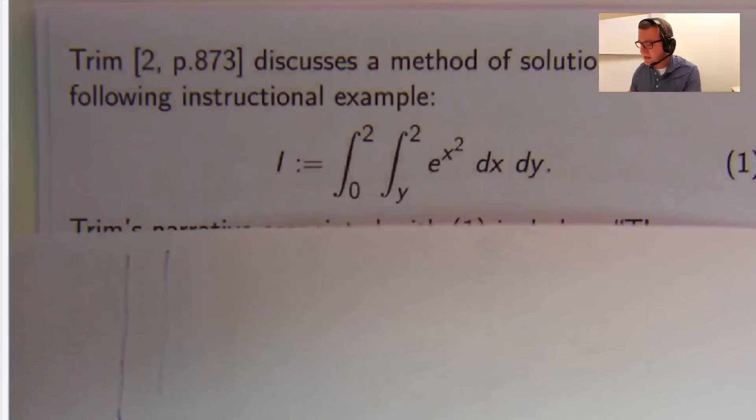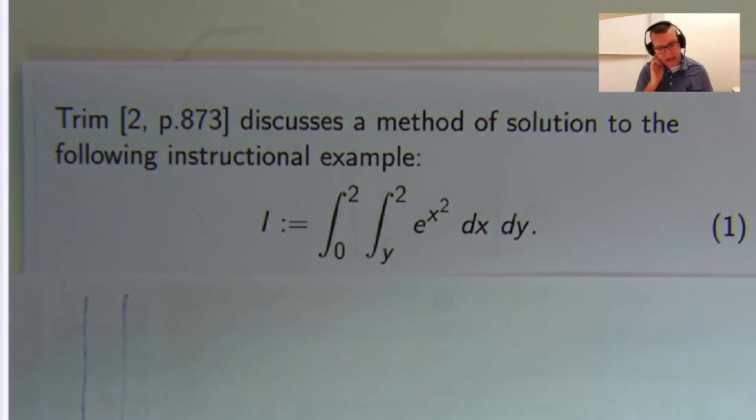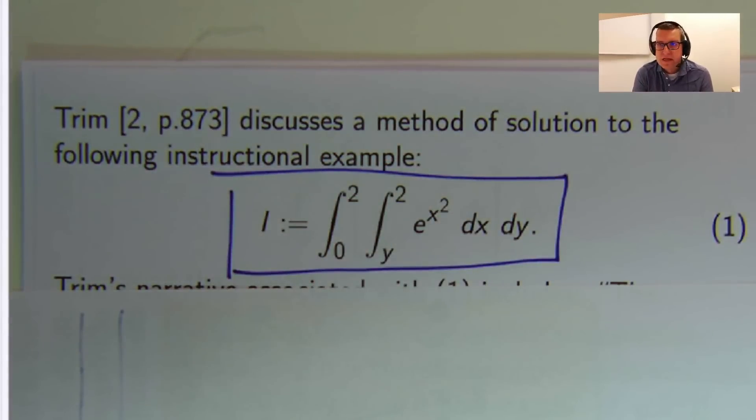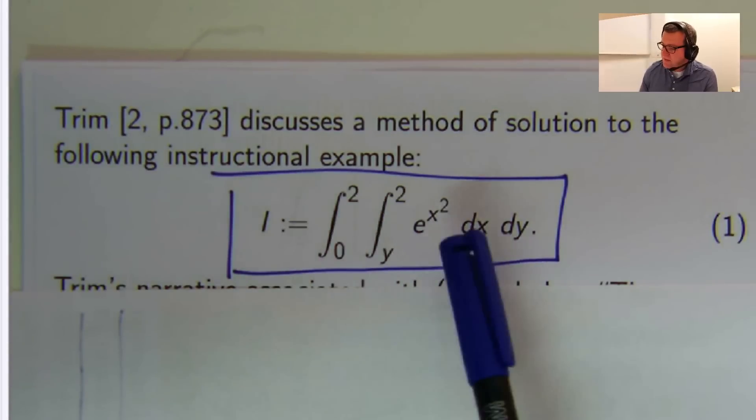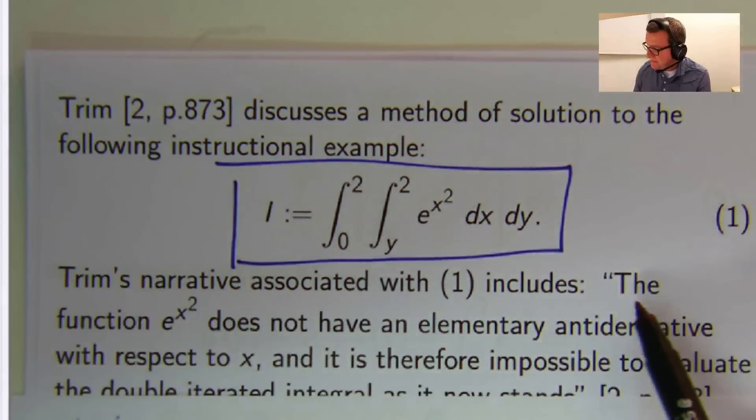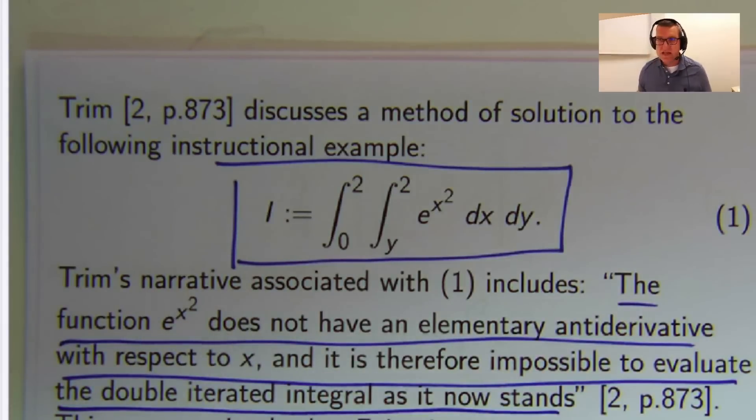So let's get down to an example. Now here I've looked at an example in a book by Trim, but there are many other examples in the paper. If you click on the description, it will take you to the paper. But this is your classic instructional example right here. So you've got this double integral. There's no anti-derivative of e to the x squared in terms of x, in terms of elementary functions. So they say, hey, let's reverse the order of integration. It says it's impossible to evaluate the double integral as it now stands. It's impossible, so we must reverse the order of integration.